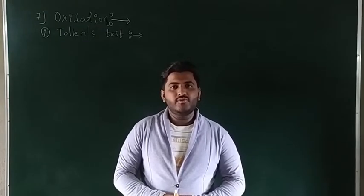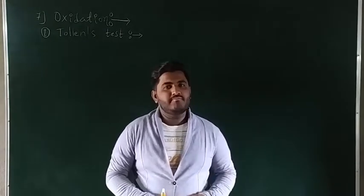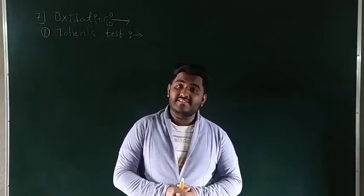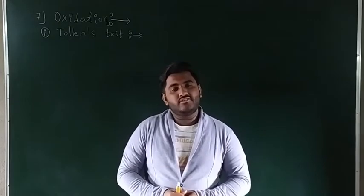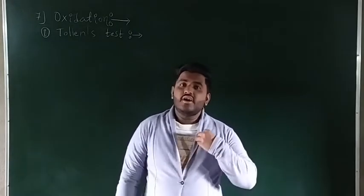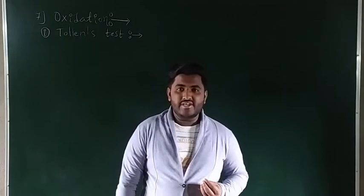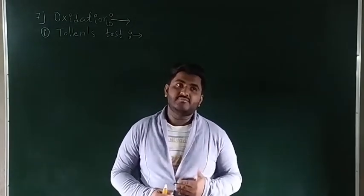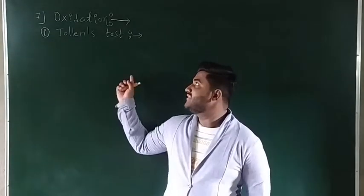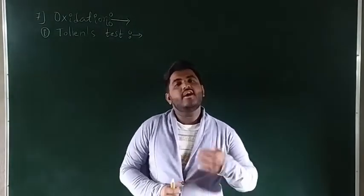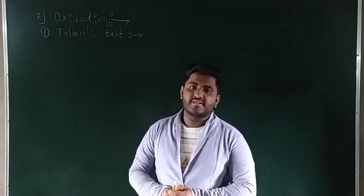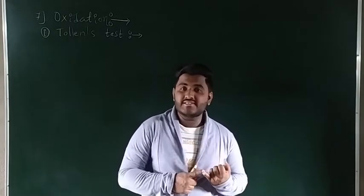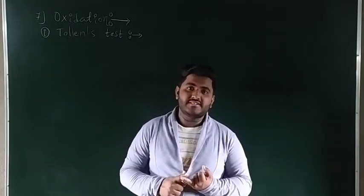Hello, welcome to this class. In the last videos we discussed reduction of aldehydes, including reduction to hydrocarbons and reduction to alcohols. Today's class is the sixth video on aldehydes and ketones, and we are going to discuss oxidation. In oxidation of aldehydes and ketones, we are mainly focusing on tests for detection of the aldehyde group — Tollens test and Fehling test — and also the haloform reaction.